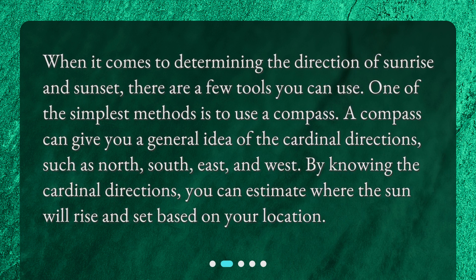When it comes to determining the direction of sunrise and sunset, there are a few tools you can use. One of the simplest methods is to use a compass. A compass can give you a general idea of the cardinal directions such as north, south, east, and west. By knowing the cardinal directions, you can estimate where the sun will rise and set based on your location.